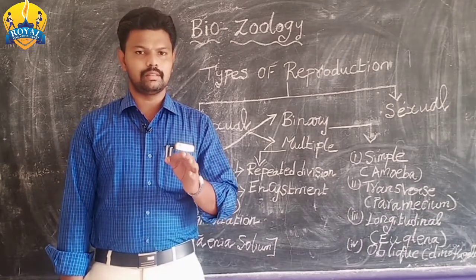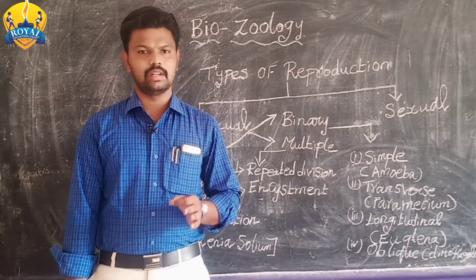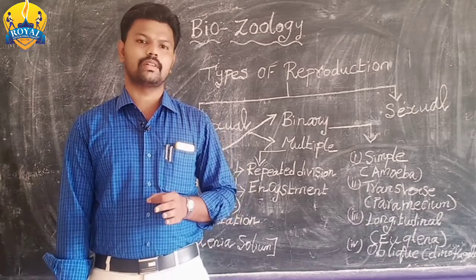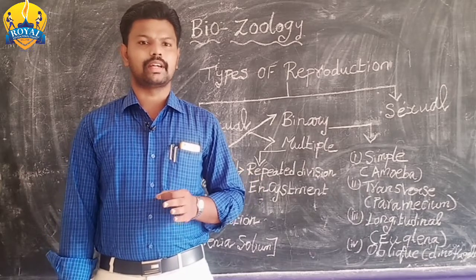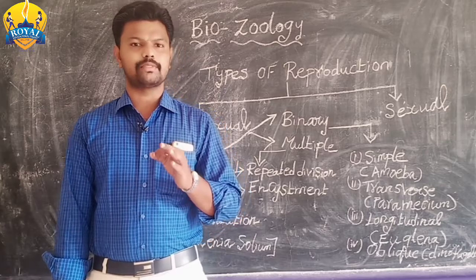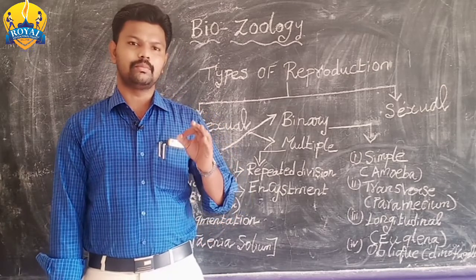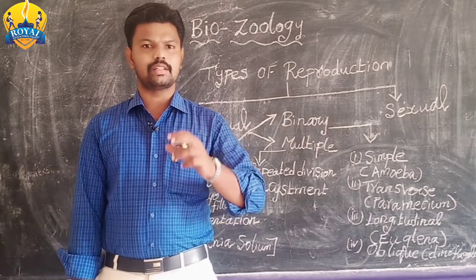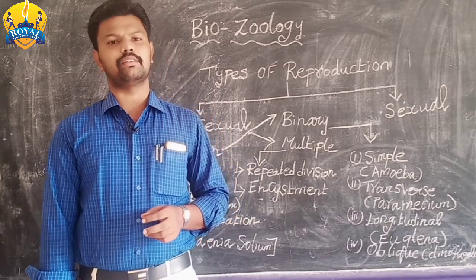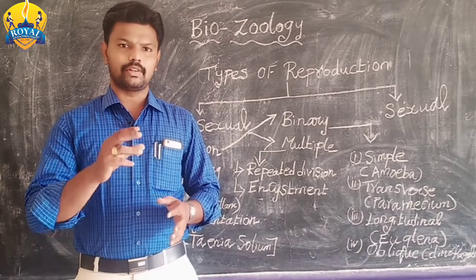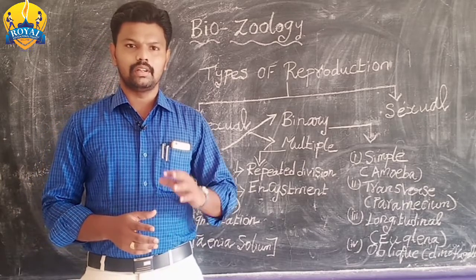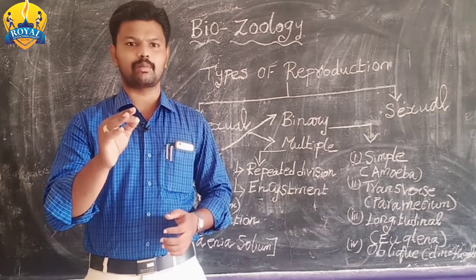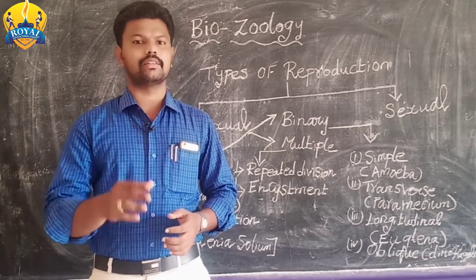Cell is the basic unit of each and every organism. The cell is made up of cytoplasm and protoplasm. A group of cells can form a tissue — so what is tissue? A group of cells forms a tissue. From the tissue, the organ will develop. That process is called organogenesis. Genesis means formation, so organogenesis means formation of an organ.